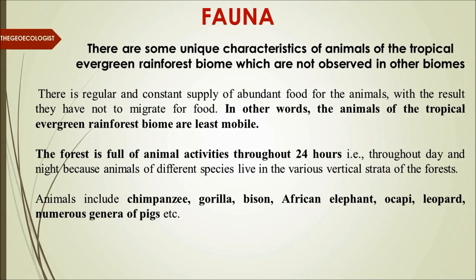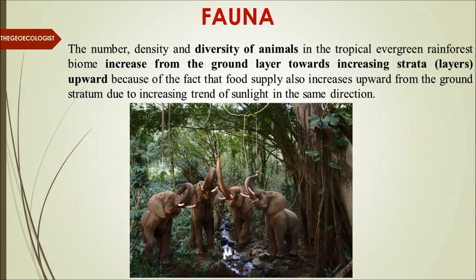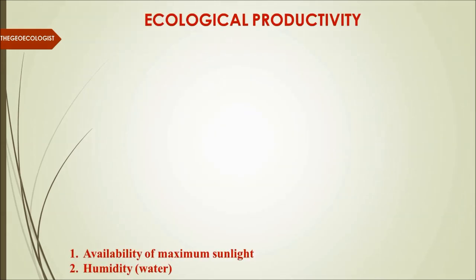Animals such as chimpanzees, gorillas, bison, African elephants, okapi, leopards, and numerous pig genera are found here, making it rich in fauna. The density and diversity of animals increases from the ground layer upward through the strata, because food supply also increases upward — the upper canopy receives more sunlight. Many animals are found on tree branches, so tree canopies have more animal activity than the ground level.